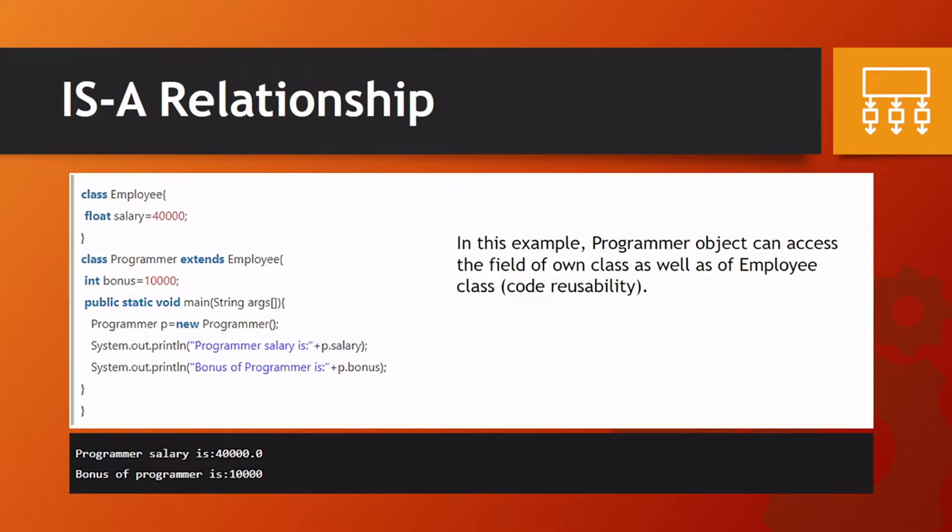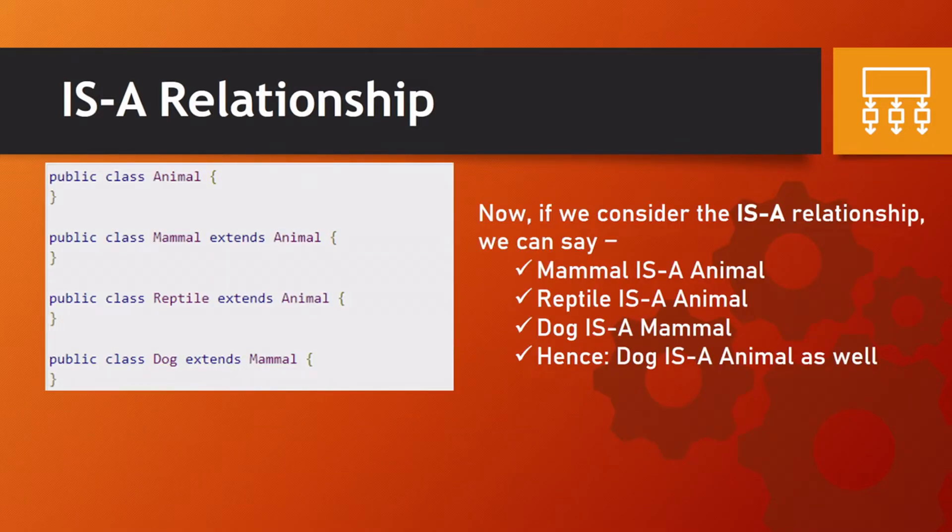Another example is we have class Animal, Mammal, Reptile and Dog. The Mammal extends the Animal, then Reptile extends the Animal, and then the Dog extends Mammal. Now if we consider the IS-A relationship, we can say that Mammal IS-A Animal, Reptile IS-A Animal, and then Dog IS-A Mammal. Hence, Dog IS-A Animal as well.